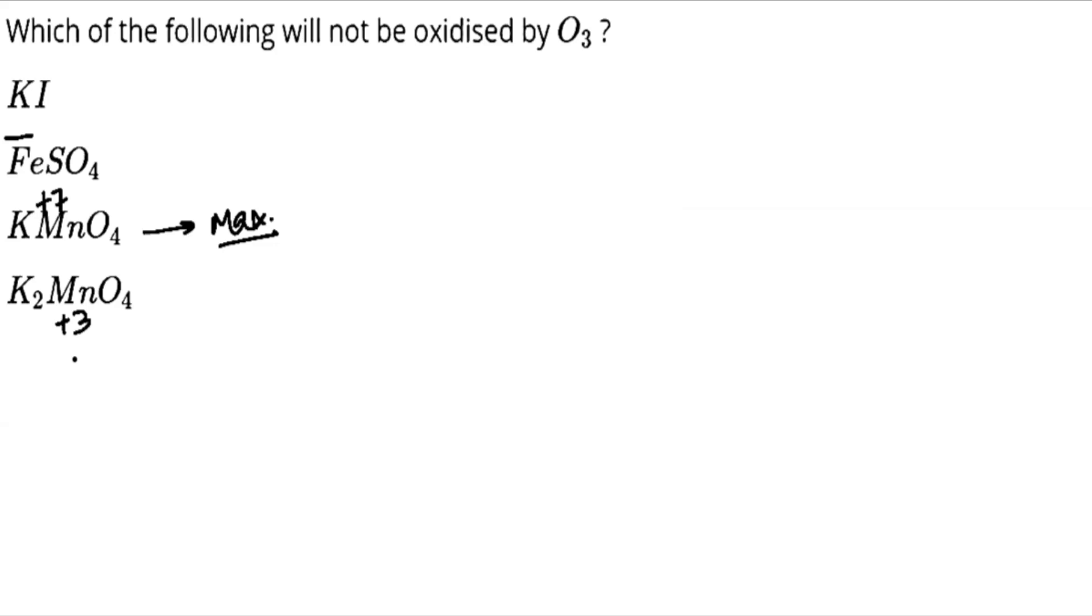If we talk about FeSO4, Fe is having oxidation number of +2. It can be oxidized further to +3 and so on. Similarly, if we write for these two, this will be oxidized further.